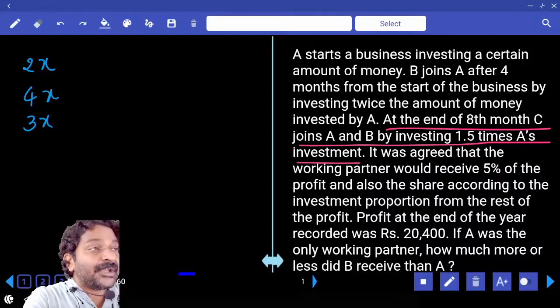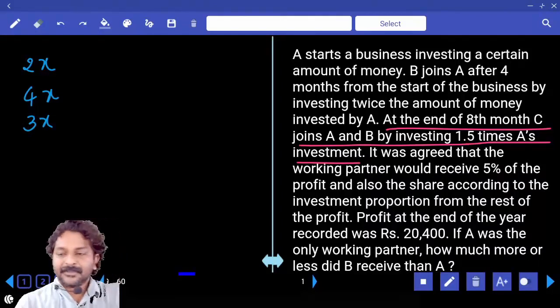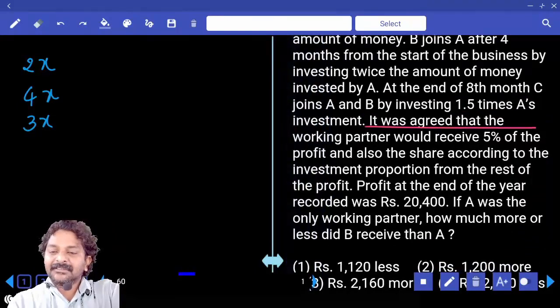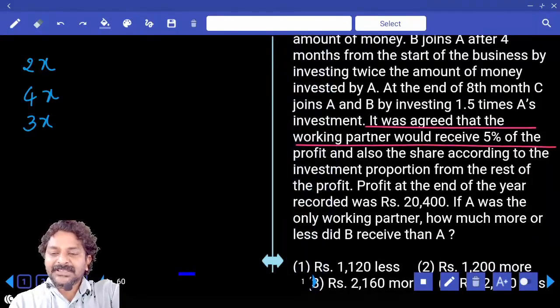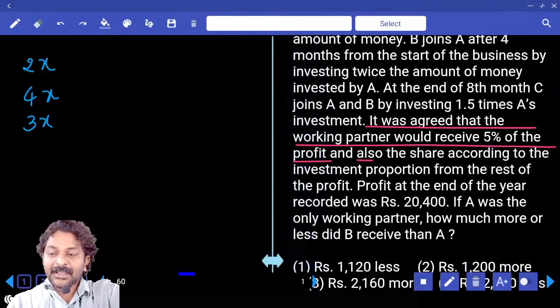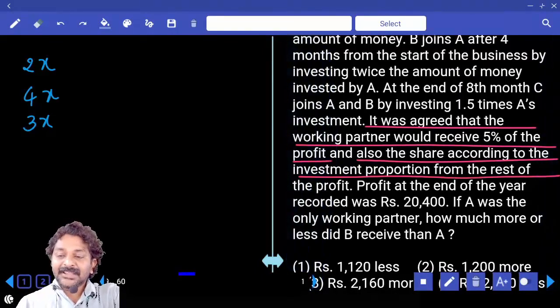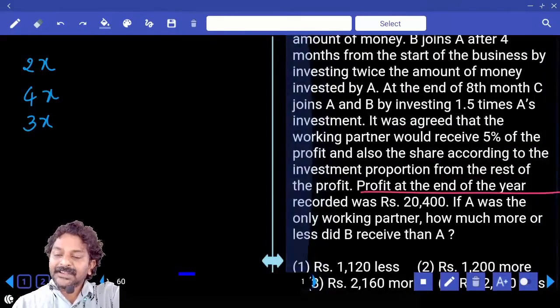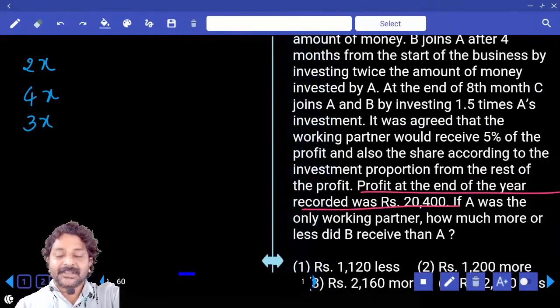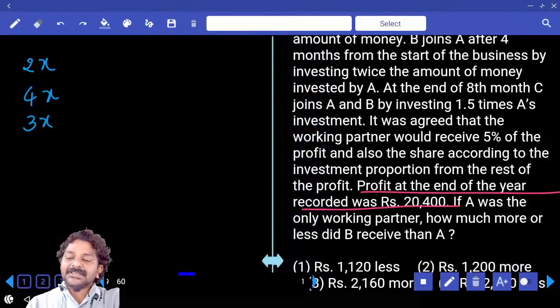When did C join? After 8 months. It was agreed that the working partner would receive 5% of the profit and also share according to the investment proportion from the rest of the profit. Profit at the end of the year recorded was 20,400.